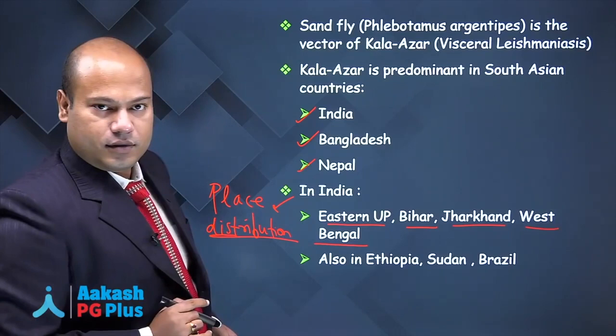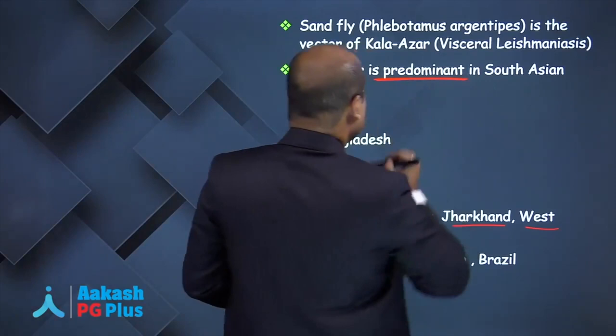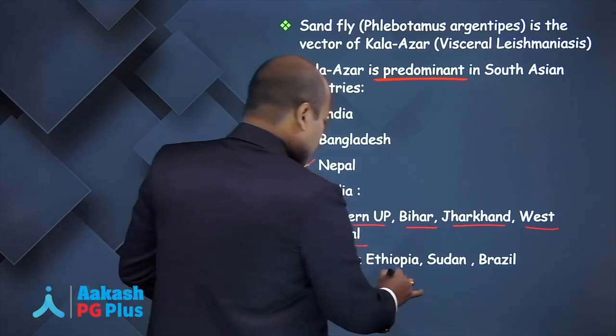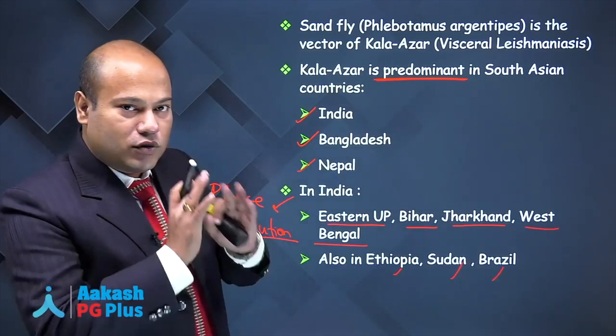Apart from South Asian countries, Kalazar can also occur in Ethiopia, Sudan, and Brazil, but it is not predominant there. It is predominant in Southeast Asian countries.